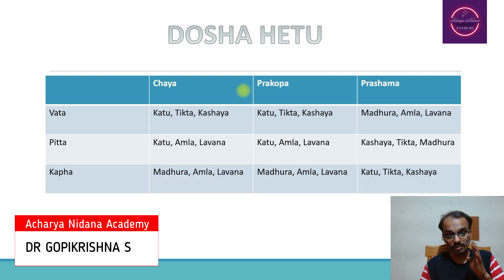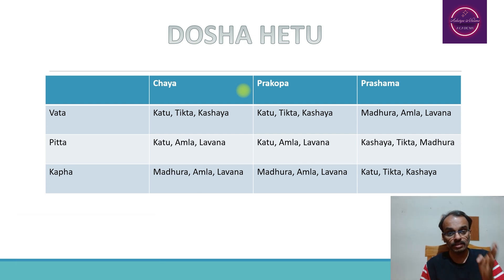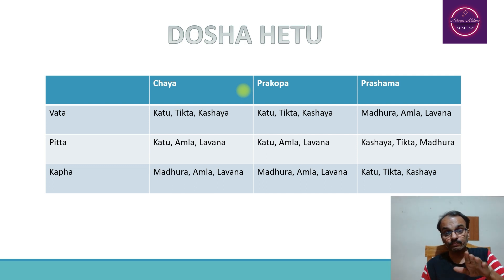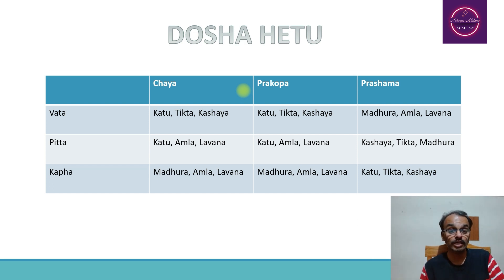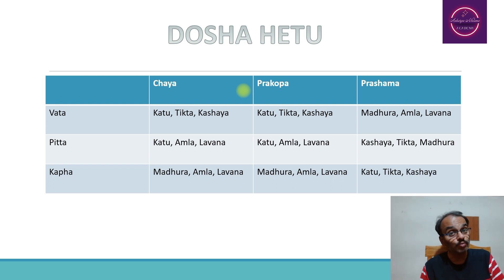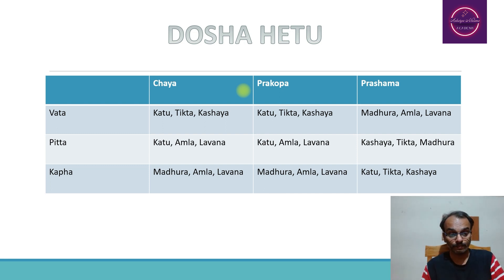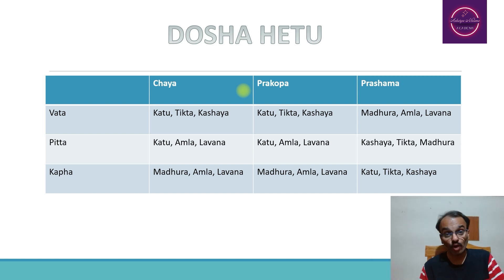In terms of seasons, as mentioned by Madhu Kosha commentary, Chaya, Prakopa, and Prasama are governed by the Shadrasa. The same Rasa responsible for Chaya can also cause Prakopa. For Vata Dosha, Chaya and Prakopa are possible because of excess Katu, Tikta, or Kashaya Rasa intake. For Pitta Dosha, Chaya and Prakopa are possible because of excessive consumption of Katu, Amla, and Lavana Rasa.